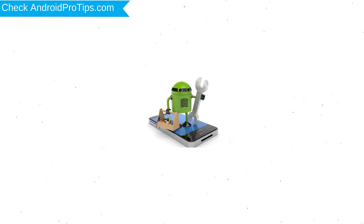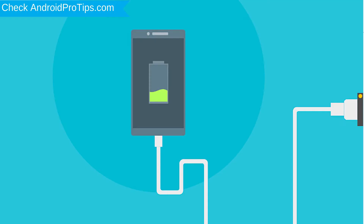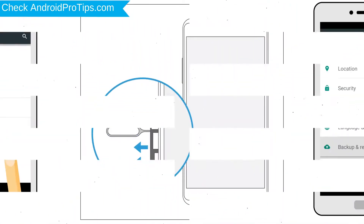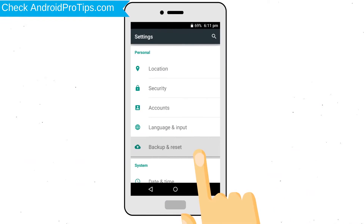Before resetting your mobile, your mobile battery must be above 50%. Remove SD cards and SIMs. Back up your Android mobile data if possible.